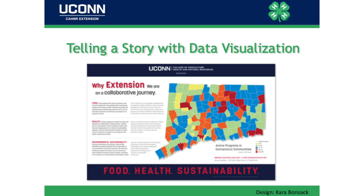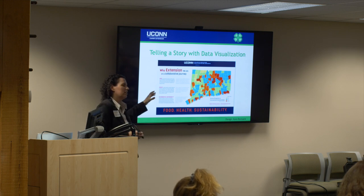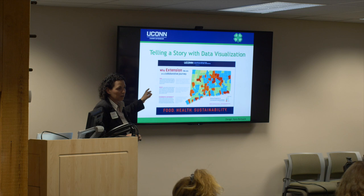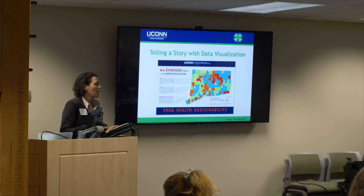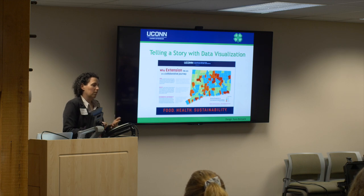We also took all of that program data and started collecting it by town. We only have 169 towns and cities in Connecticut. We found that 4-H is in 168 of 169 towns and our soil test program is in all 169 towns. We collected all of that and made a map, color-coded for our legislators. Our primary audience when we started was our UConn administrators and legislators, because we're a small state and policy matters.